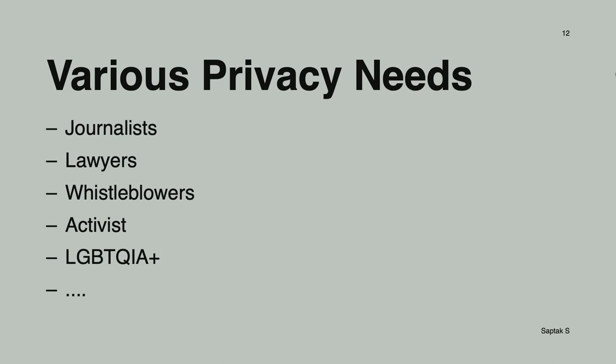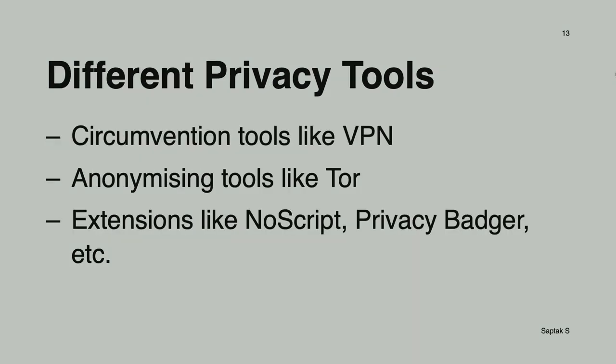Those factors change their privacy needs. It's important to understand that not everyone with a high security and privacy need is a tech-savvy person who uses a terminal and writes difficult code. Journalists and lawyers might be using a normal Windows computer, and they might be using tools like VPN for circumvention, or anonymizing tools like Tor.